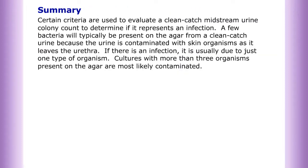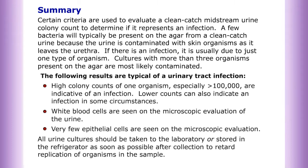In summary, certain criteria are used to evaluate a clean catch midstream urine colony count to determine if it represents an infection. A few bacteria will typically be present from a clean catch urine because urine is contaminated with skin organisms as it leaves the urethra. If there is an infection, it is usually due to just one type of organism; cultures with more than three organisms are most likely contaminated. Typical results of a urinary tract infection include high colony counts of one organism — especially greater than 100,000 — though lower counts can also indicate infection in some circumstances. White blood cells are seen on microscopic evaluation, and very few epithelial cells are present.